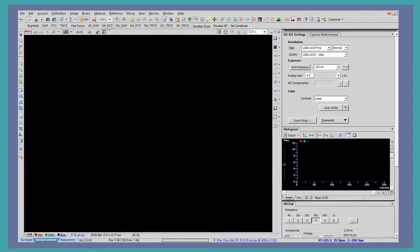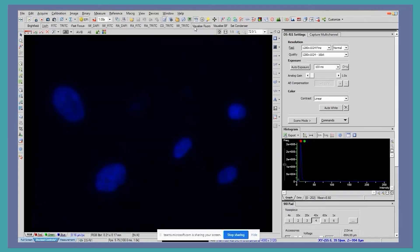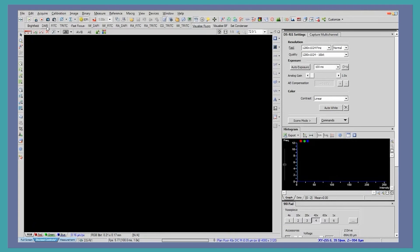There are many buttons and different features to note, but today we'll just focus on some of the more basic features. This button here highlights that we can get the live image from our microscope onto the screen. Additionally, there are different channels we can look at such as DAPI for blue, FITC for green, and TRITC for red.